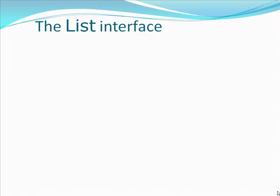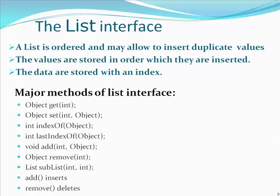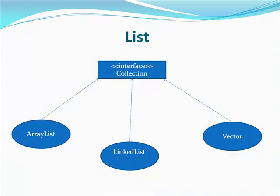The List Interface: A list is ordered and may allow duplicate values. The values are sorted in the order in which they are inserted. The data are stored with an index. These are the major methods of the List interface. There are three main classes that implement the Collection interface: ArrayList, LinkedList, and Vector.